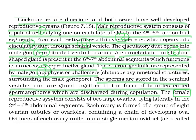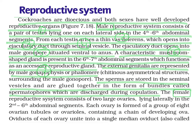Now let us discuss the reproductive system. If we see cockroaches, as I have told you earlier, male and female cockroach can be identified externally without observing their internal organs. This is known as sexual dimorphism. The difference between male and female cockroach is the presence of anal styles, which are only found in male cockroach and absent in female.